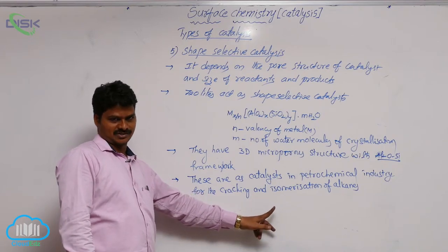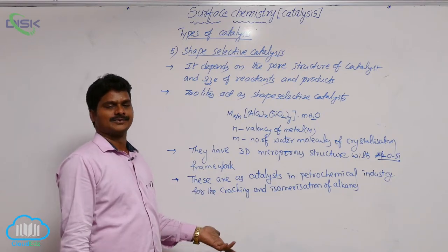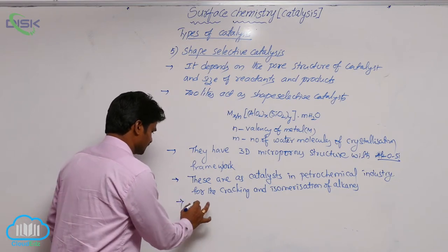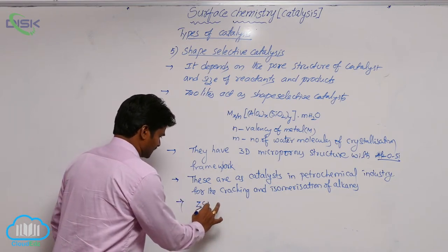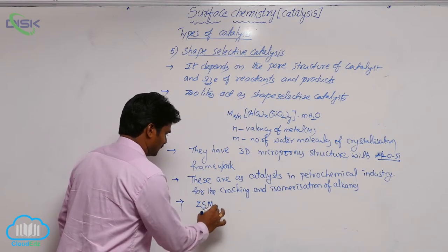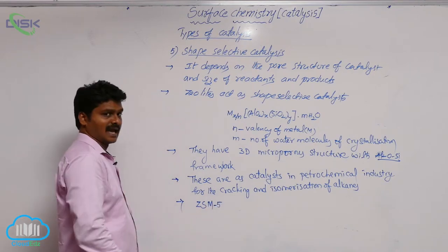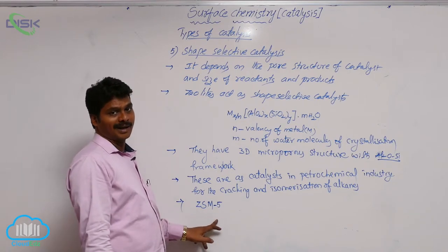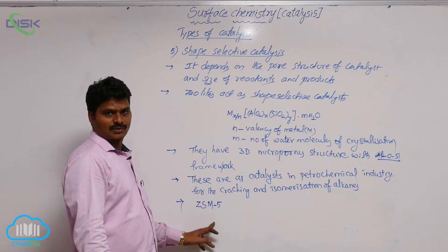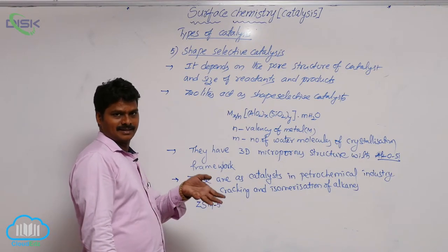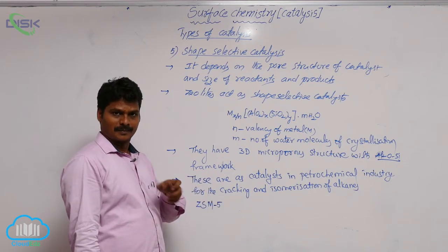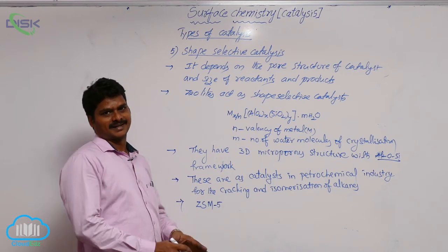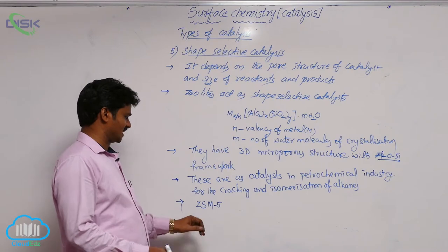In cracking and isomerization, zeolites are used as catalysts. Among all the zeolites, ZSM-5 is of particular importance. ZSM stands for Zeolite Socony Mobile — the company Socony Mobile prepared this catalyst, and it is the fifth zeolite prepared by that company. That's why it is named ZSM-5.